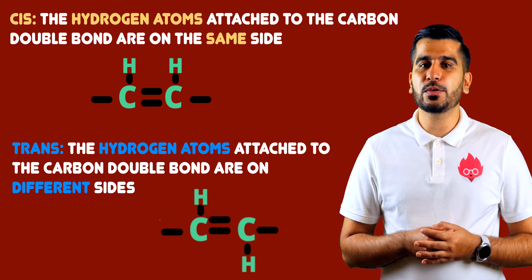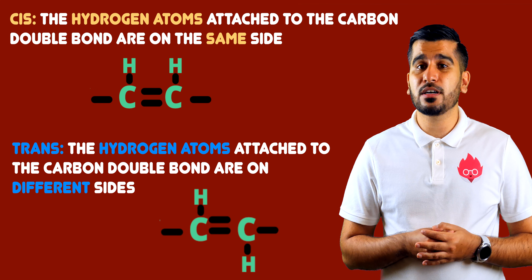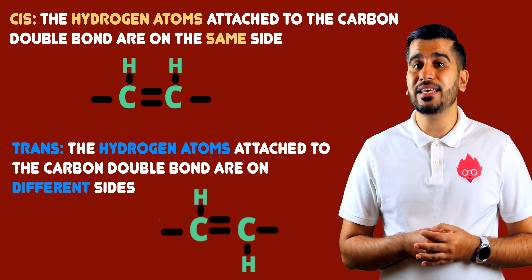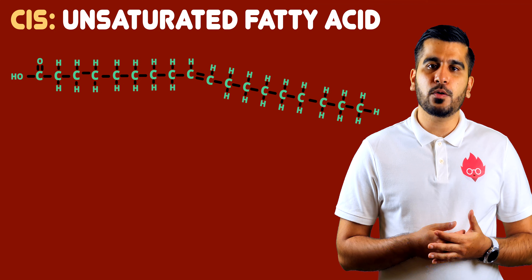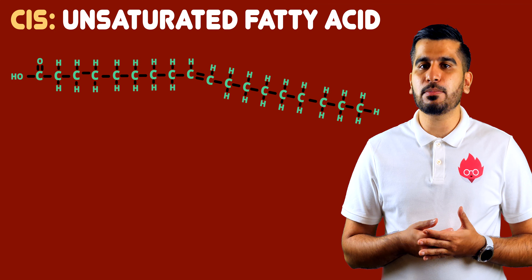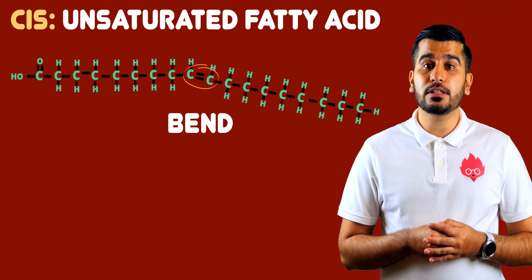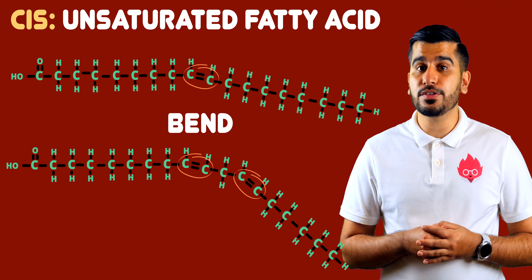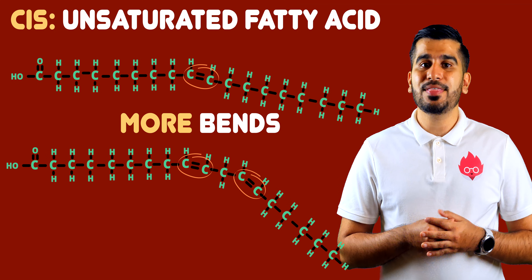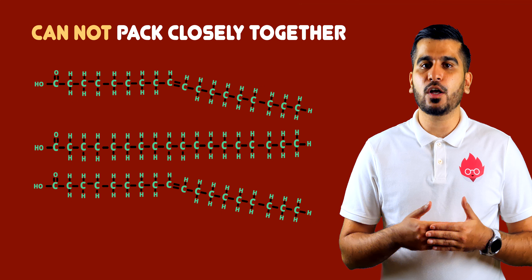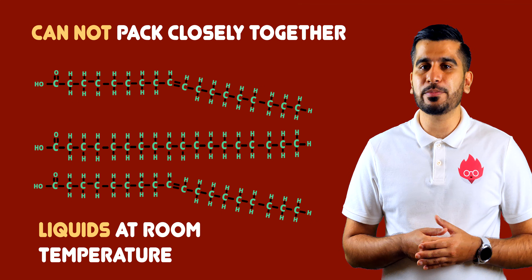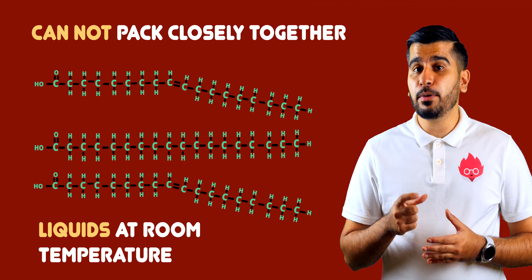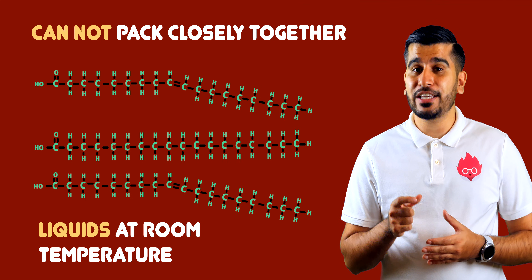The arrangement of molecules around the carbon-to-carbon bond can differ. This arrangement can either be in a cis or trans form. In the cis form, the presence of the double bond creates a bend in the chain. The more double bonds, the more bends. This makes it difficult for them to pack closely together, and also explains why they are liquids at room temperature, as the bonds between the chains are weaker.